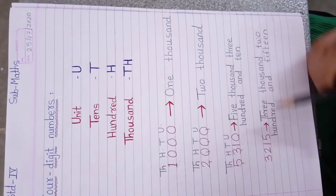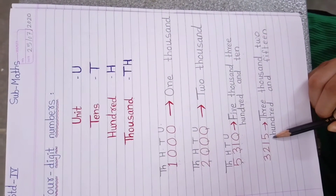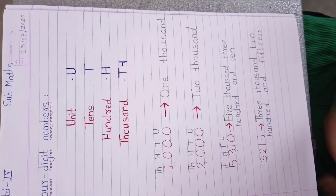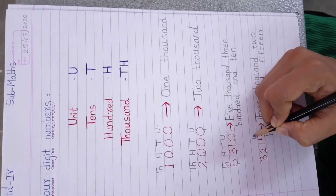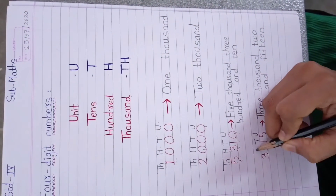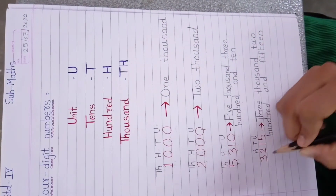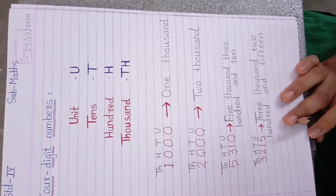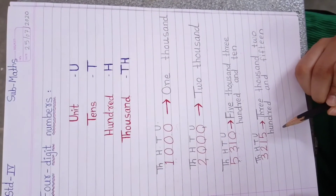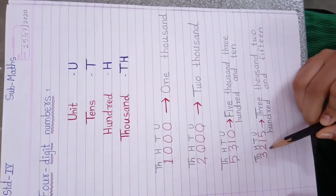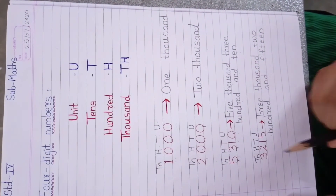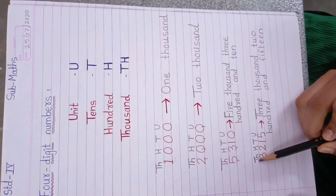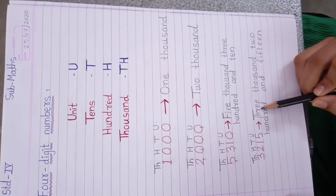Now the next number — see here. Here also how many digits? 1, 2, 3, 4. So 5 is on which place? 1 is 10, 2 is 100, and 3 is on the TH place. Now you tell me how will we read this — 300? No, we will read it as 3000. Why? Because 3 is on the 1000 place, that's why we will read it like this.